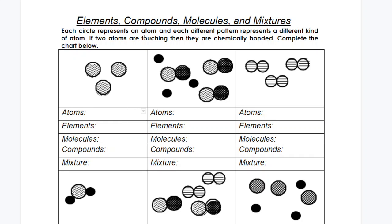Let's get started. I'm going to do the first two for you. So it says: each circle represents an atom, and each different pattern represents a different kind of atom. If two atoms are touching, then they are chemically bonded. Complete the chart below.